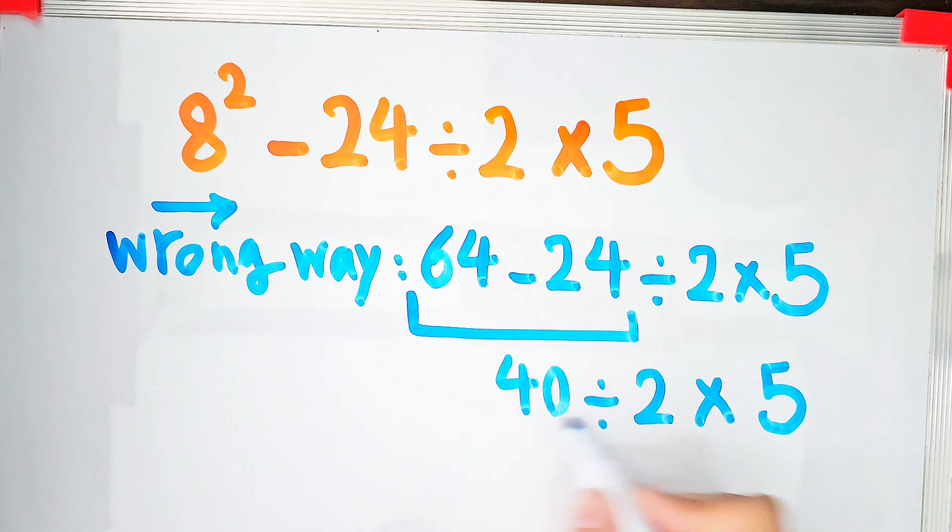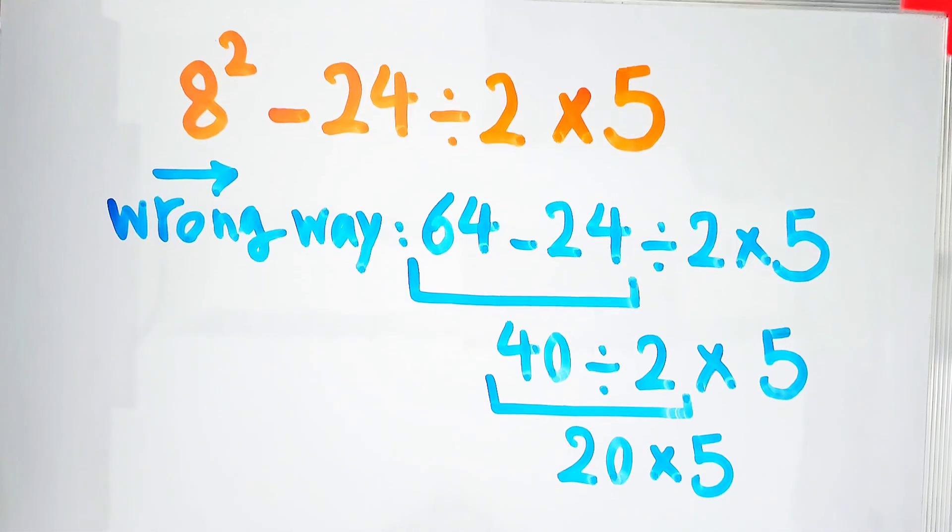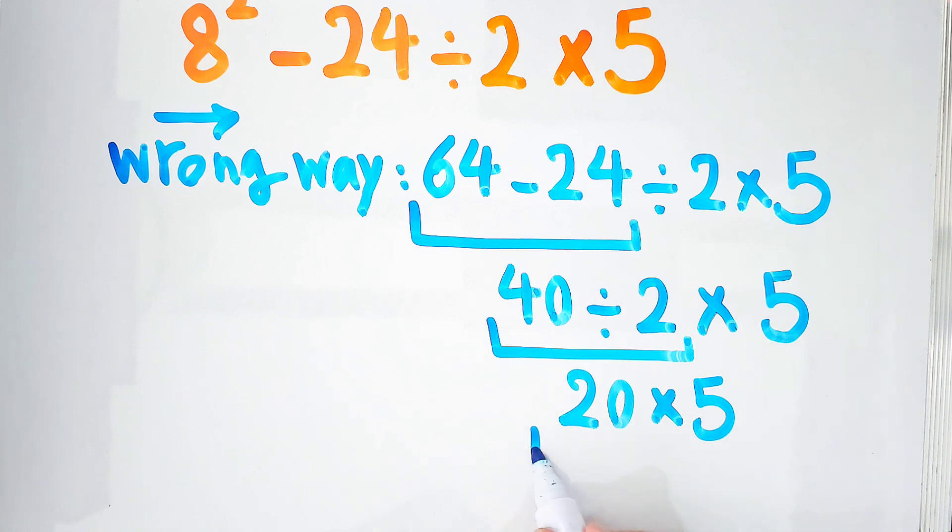And again they start from the left side and simplify 40 divided by 2 equals 20 and 20 times 5 equals 100. They think it's the correct answer but it's wrong. What is the correct answer of this question?